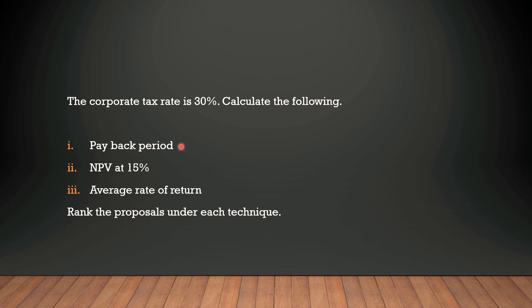We have to calculate: first, the payback period — the plain payback period, not discounted; second, NPV — net present value at 15 percent discounting rate; and third, the average rate of return. Under each technique we have to rank the proposals, deciding which project should be accepted and which should be rejected.